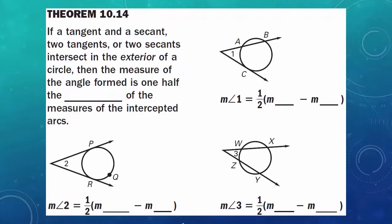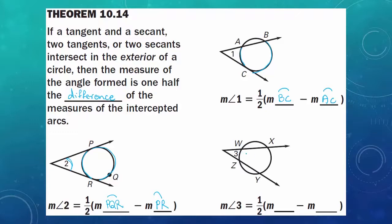Theorem 10.14: If a tangent and a secant, two tangents, or two secants intersect in the exterior of a circle, then the measure of the angle formed is one-half the difference of the measures of the intercepted arcs. For a secant and tangent meeting outside the circle, the measure of angle 1 is one-half (arc BC minus arc AC). For two tangents, the measure of angle 2 is one-half (arc PQR minus arc PR). For two secants, the measure of angle 3 is one-half (arc XY minus arc WZ).